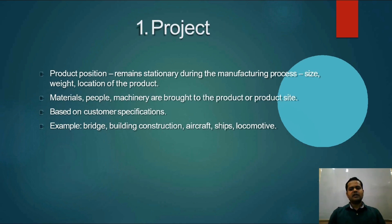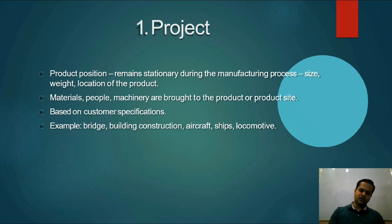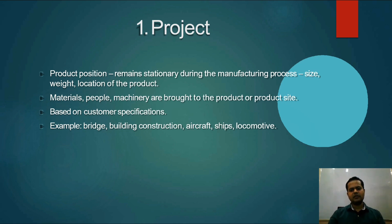What is project production? When we need to create something like a bridge, all the equipment, machinery, and raw materials are brought to one place. All resources come to the same location — not that we move the project from one place to another. The same machines and equipment are required at the same place. This is project production. Another example is a ship — we build a ship at one location.